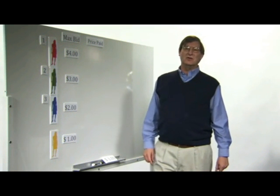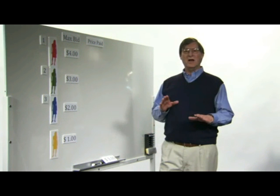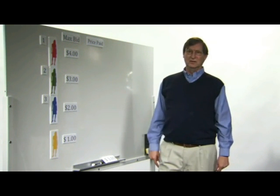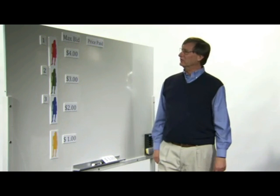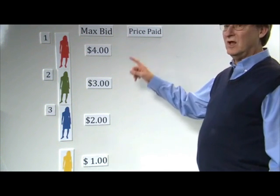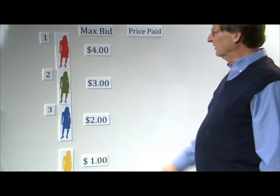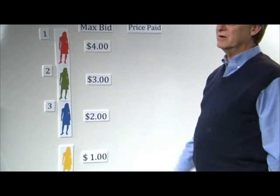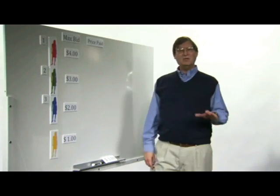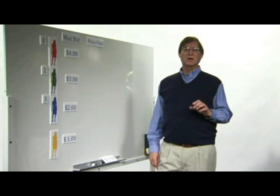Now that we understand the motivation of the players, we can look at how their actions are reconciled in the auction. I'm going to do a very simple example to start with. It's a case where there are three slots — three positions where ads could appear — and there are four bidders competing for those slots. Every time a query is made on Google, we run an auction.